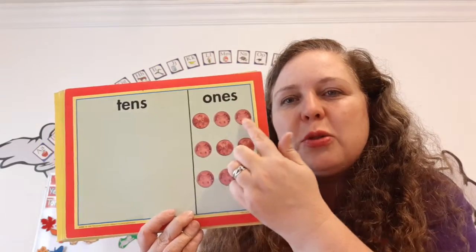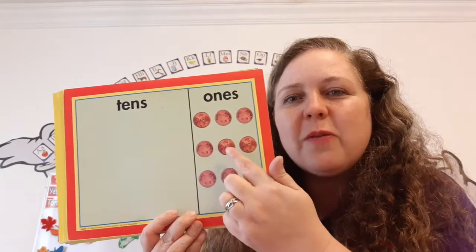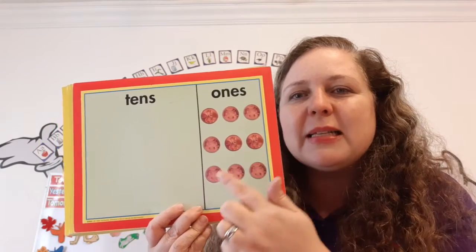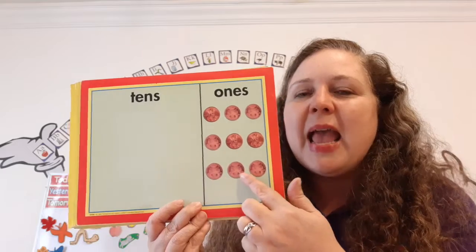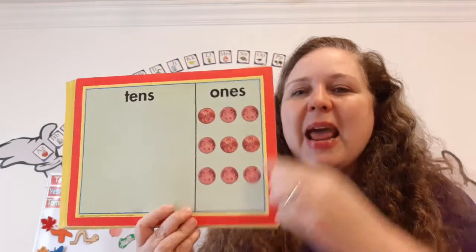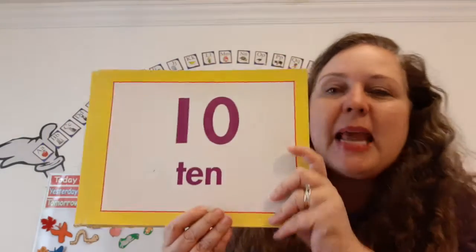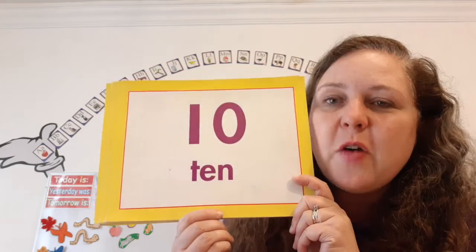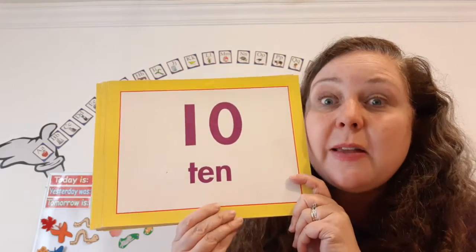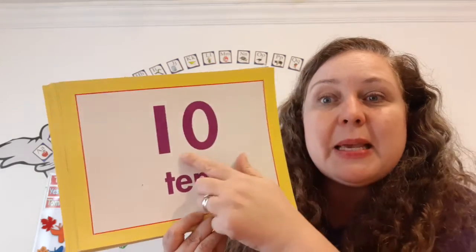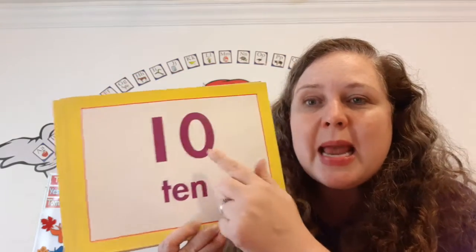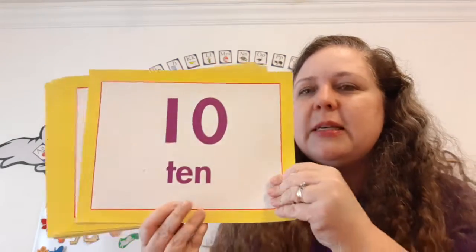One, two, three, four, five, six, seven, eight, nine. Ten. Ten is the father of the teen family because it begins with a one and ends with a zero.